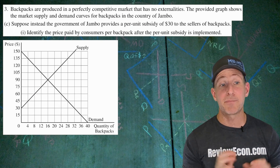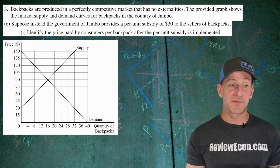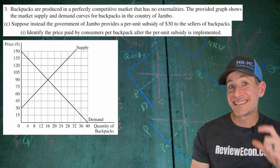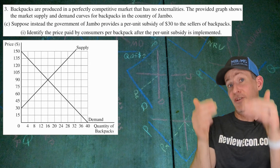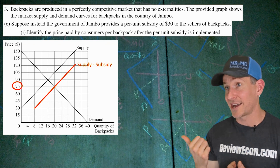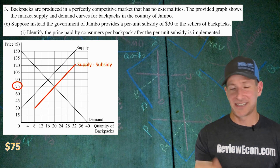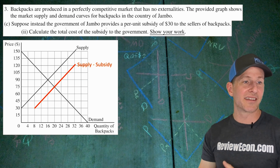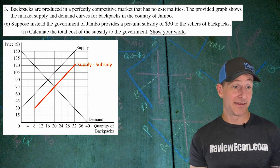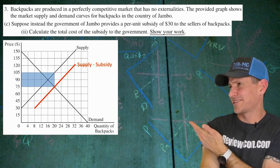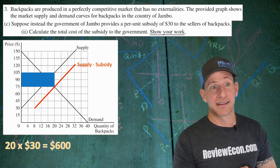Suppose instead the government of Jonbo provides a per-unit subsidy of $30 to sellers of backpacks. We identify the price paid by consumers. The subsidy shifts the supply curve down by the vertical distance of $30 — two boxes, since each box is $15. Drawing the new supply curve gives a new equilibrium price of $75 for consumers. To calculate the total cost of the subsidy: the new quantity is 20 units times the $30 subsidy, giving $600 of expenditure for the government.